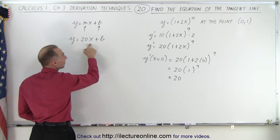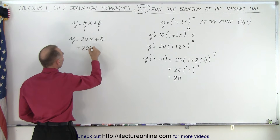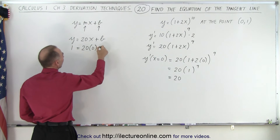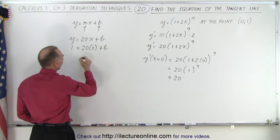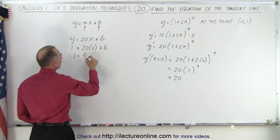So when x equals 0, we get 20 times 0, and y equals 1, plus b. So in this case, we get 1 equals b.